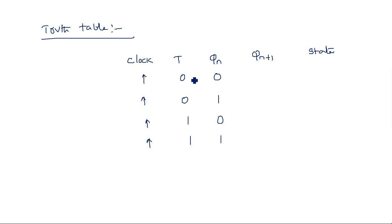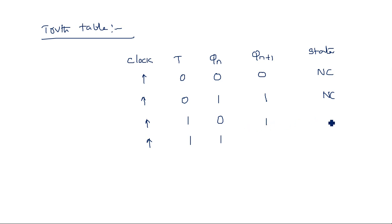When T=0 and Qn=0: output is same as previous state = 0, no change. When T=0 and Qn=1: previous state is 1 so output is 1, no change. When T=1 and Qn=0: it is complement of previous state, complement of 0 is 1 — toggle state. When T=1 and Qn=1: complement of previous state, complement of 1 is 0 — also toggle state.